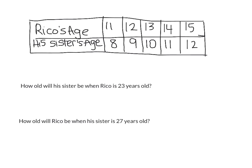Sometimes we might be given two sets of numbers and we have to identify the relationship between them. In this table, we have a brother and a sister's ages and we have to figure out what is the relationship between their ages. If we take a look, when Rico is 11, his sister is 8. When Rico is 12, his sister is 9. We can figure out that Rico is 3 years older than his sister.